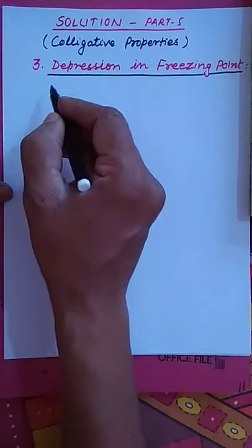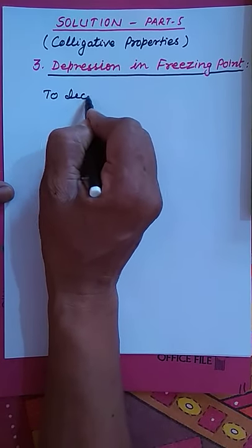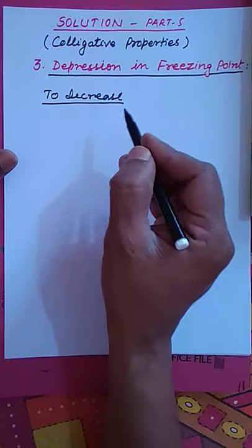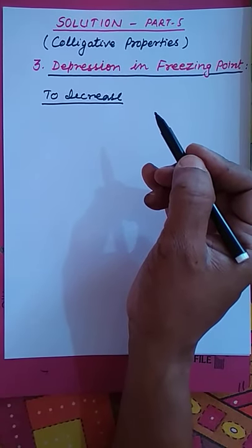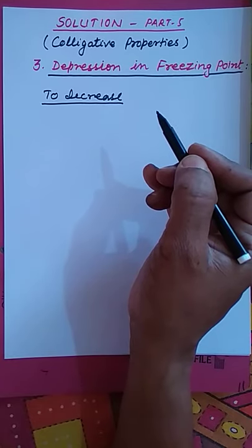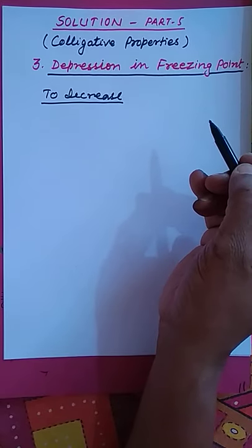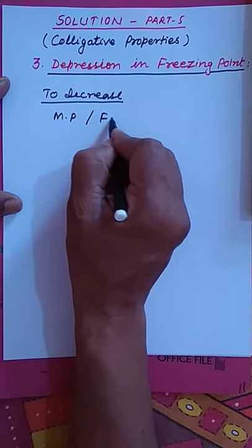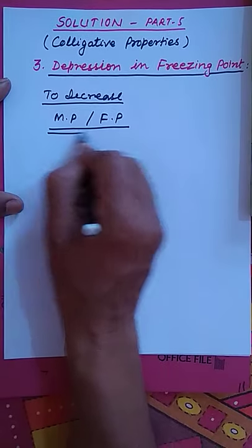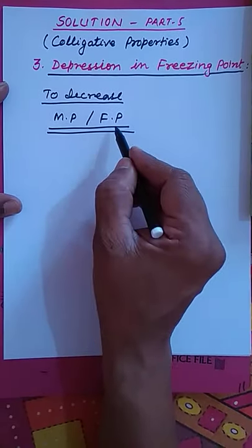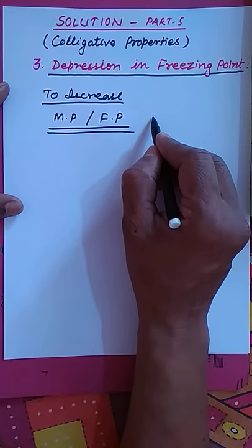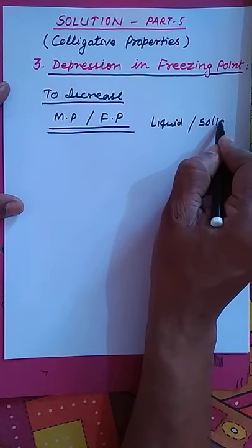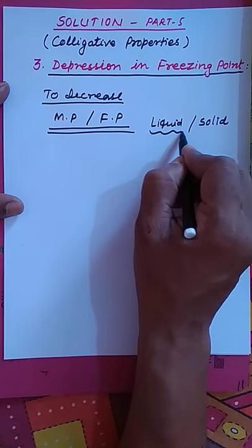Depression means lowering. Freezing point — you know that a liquid freezes at a certain temperature; that temperature is called the freezing point. It is also called the melting point; melting point and freezing point are both the same. At the freezing point, a substance exists in both phases — liquid and solid — so there is equilibrium between them.